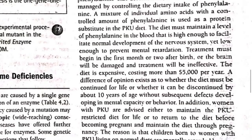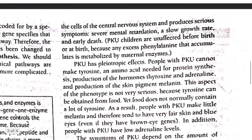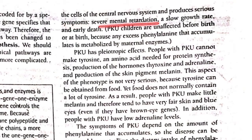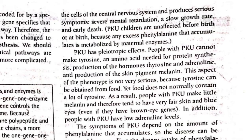Excess phenylalanine drastically affects the cells of the central nervous system and produces serious symptoms: severe mental retardation, a slow growth rate, and early death. Children with phenylketonuria are unaffected before birth or at birth because any excess phenylalanine that accumulates is metabolized by maternal enzymes.